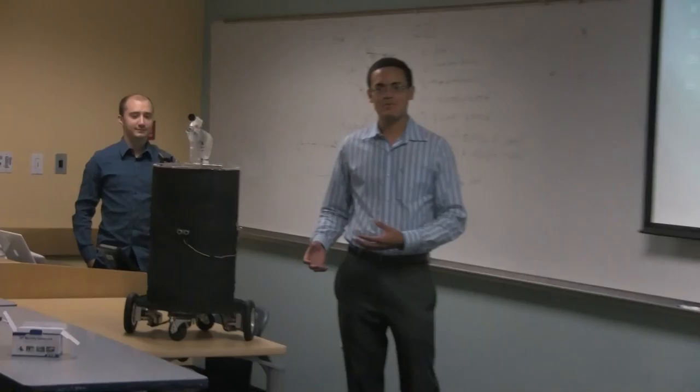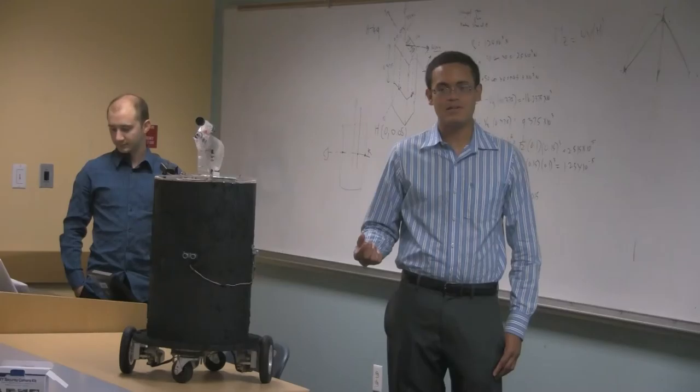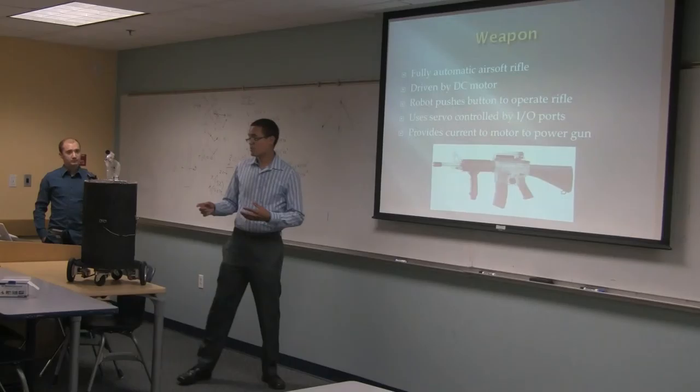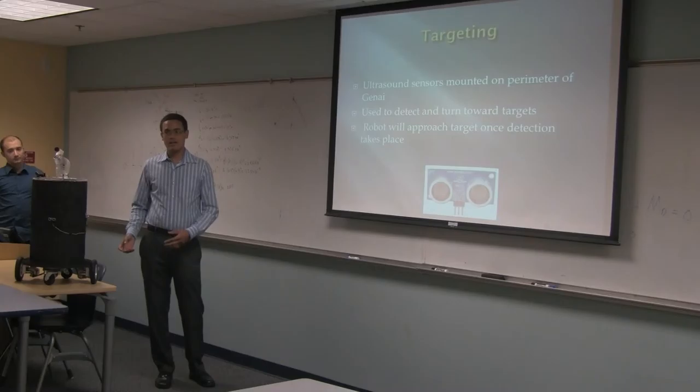For this purpose, we needed a weapon that would dissuade somebody but of course not be lethal. So for these purposes, we've used an airsoft rifle. It uses soft plastic BBs. They do sting somewhat, but they're not lethal. They're not going to severely harm your relatives or anything of the sort. So this gun is fully automatic. It's driven by a DC motor, and we have our servos controlled by an IO board, and what it does is it pushes down on this button right here and it fires the gun.